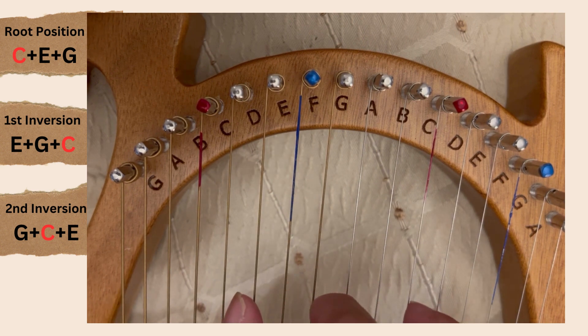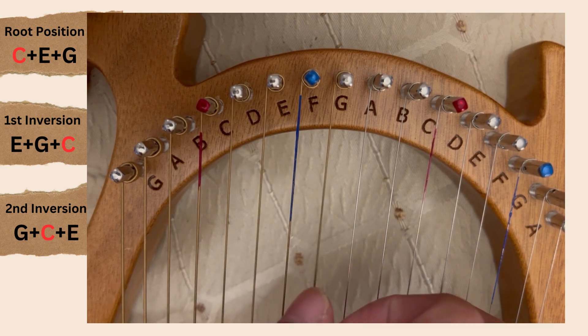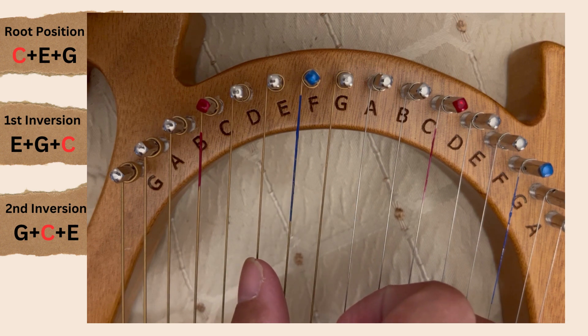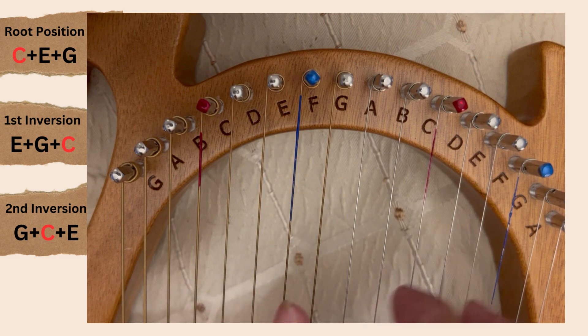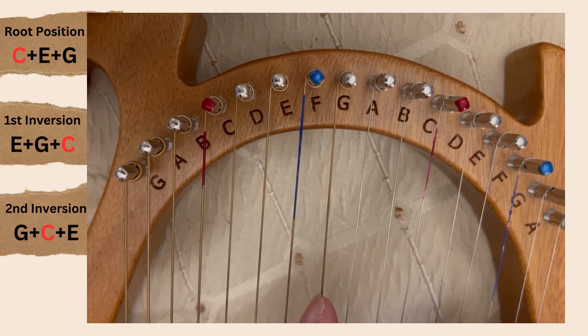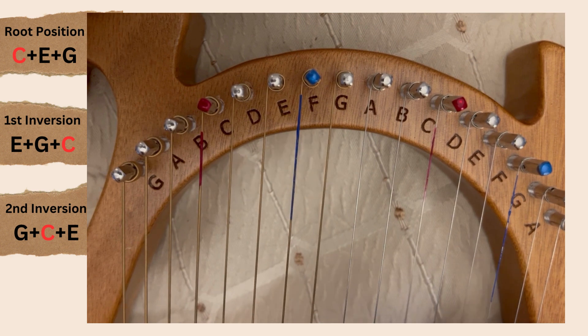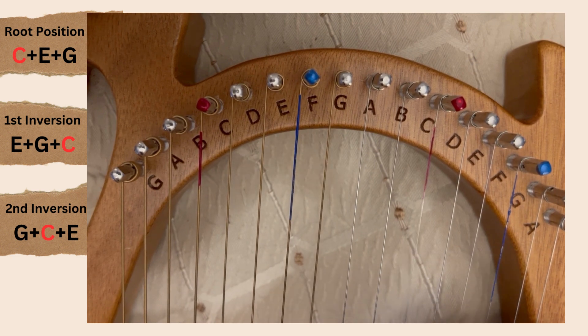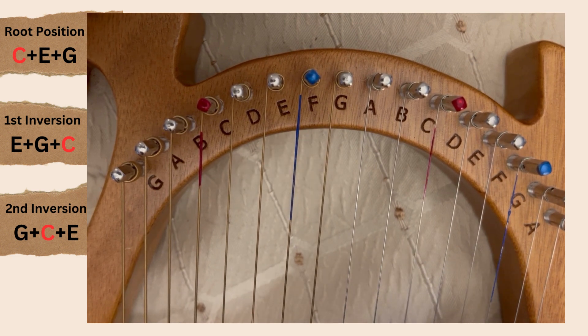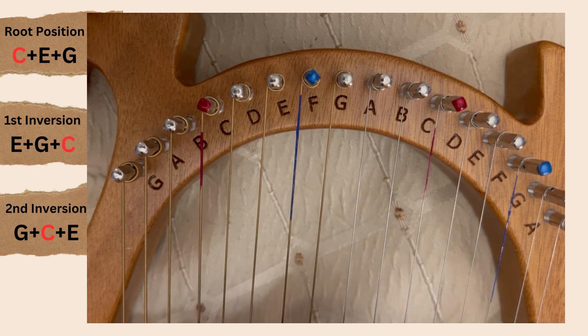And if we want to do another inversion, we can put the bottom note - and this time it's E - we put that up the top here. And our C chord becomes G, C, E. It doesn't matter which order you have them, as long as those notes are present and it's still a C chord.